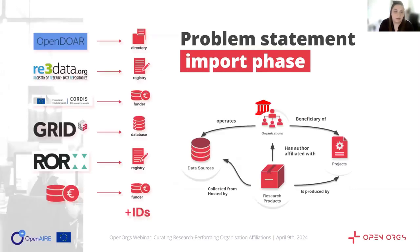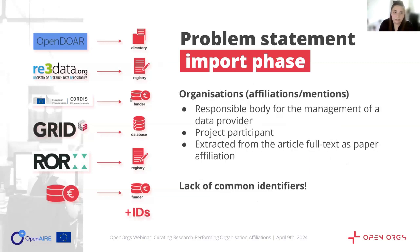Within Open Air, organizations are introduced through the Open Air aggregation subsystem, which gathers information about organizational entities from a diverse range of data sources, each presenting the data in its unique way. Key contributors of organization lists include OpenDoor, R3Data, Cordis, and GridRoar, among others. Because we are collecting information from many different sources, it is not easy to determine whether the information refers to the same organization. Organizations are mentioned in various ways: as responsible bodies for managing data providers, as managers or beneficiaries of projects, and as affiliations of researchers in the full text of articles and papers.